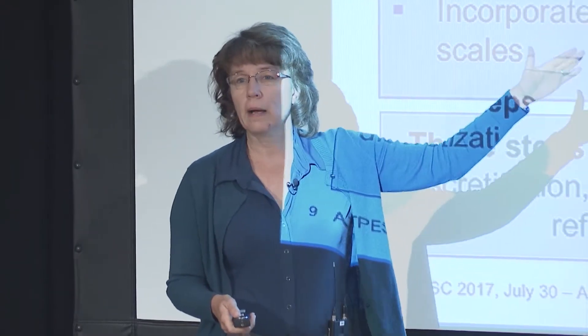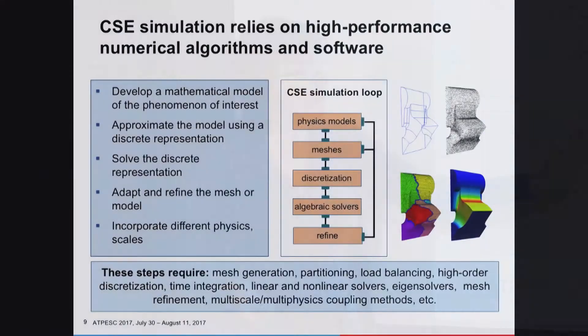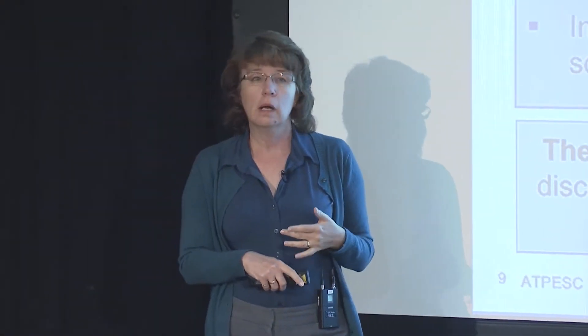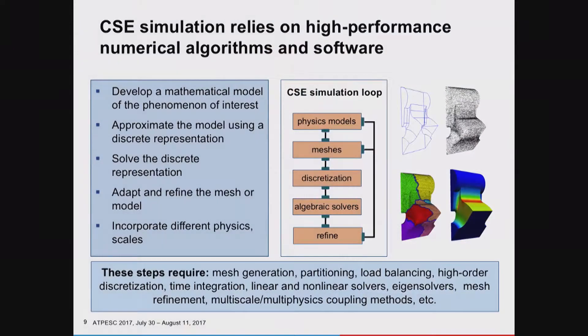This results in large-scale linear systems you can solve using a variety of different techniques. You'll want to understand the error in your solution, refine it, and perhaps iterate through that a number of times. This involves lots of different kinds of software, ranging from mesh generation tools to, once you have a very large-scale mesh, how do you chop that problem up to minimize the data movement? Increasingly, you can also reduce data movement by looking at higher-order discretizations, which are much more effective on today's architectures. All of this complexity—linear and nonlinear solvers, eigensolvers, mesh refinement libraries, error indicators, coupling methods—is just in the primary simulation loop for computational science and engineering.